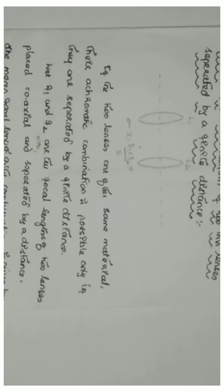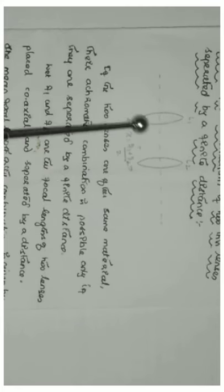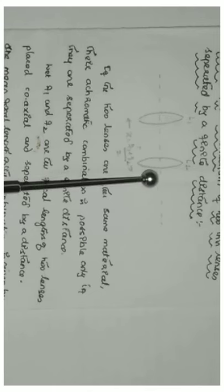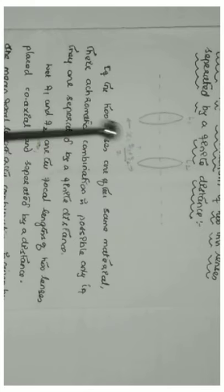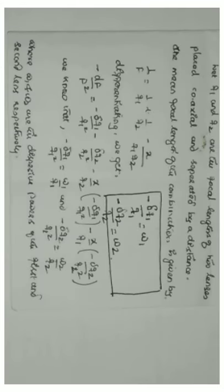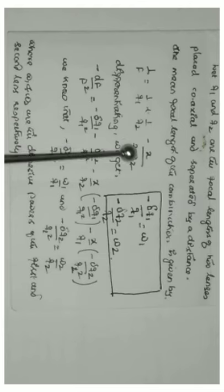Let us consider two thin lenses L1 and L2 of focal length F1 and F2, which are separated by a distance and are mounted coaxially. When they are mounted coaxially separated by distance, the mean focal length of the combination is given by: 1/F = 1/F1 + 1/F2 − X/(F1·F2).